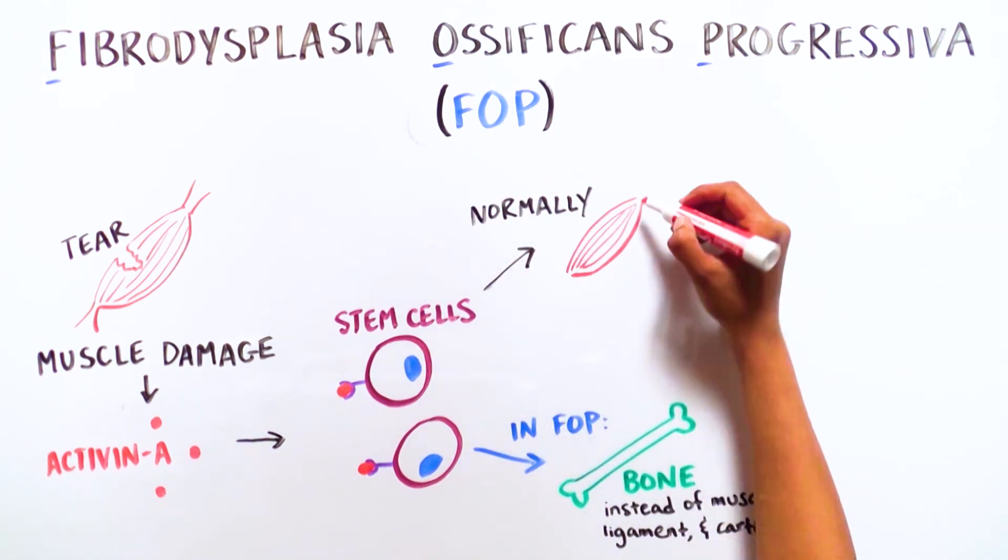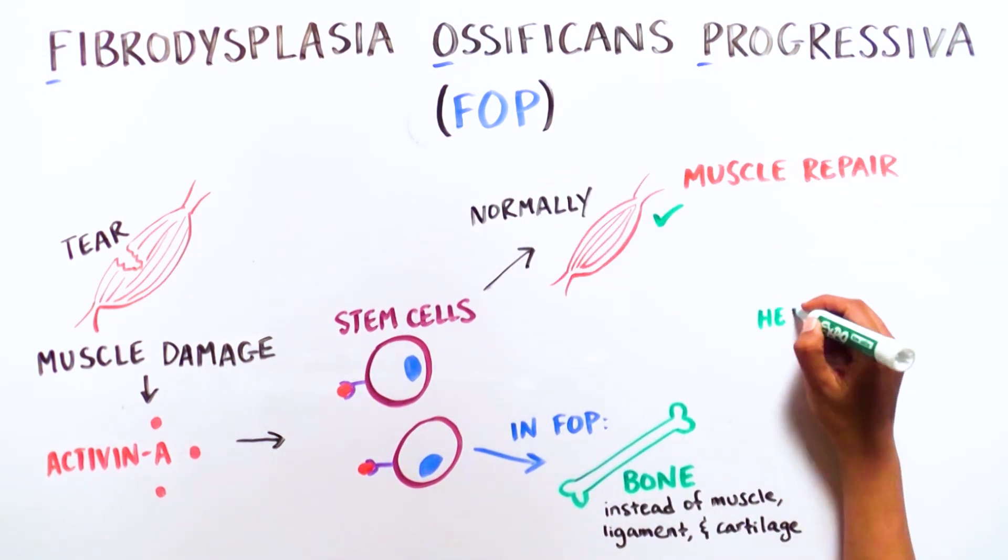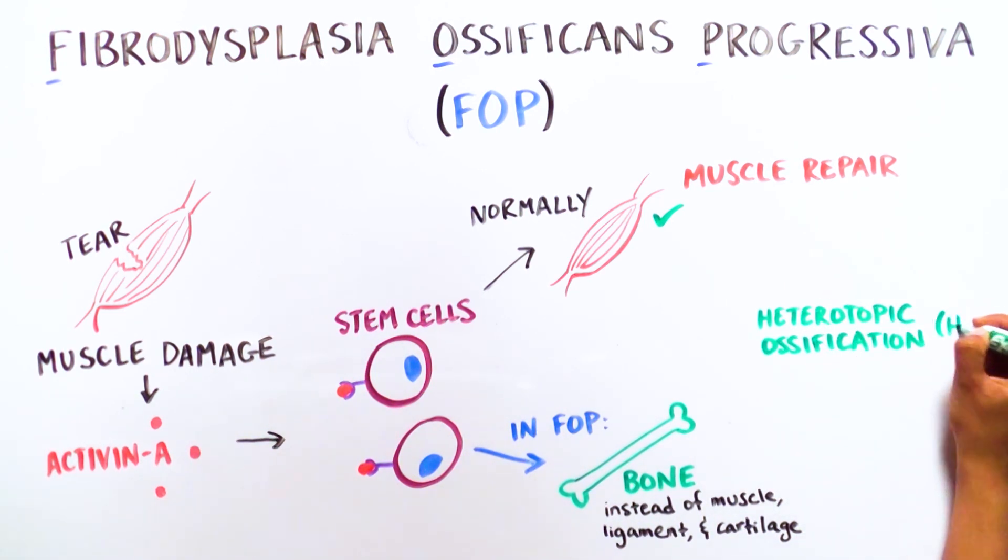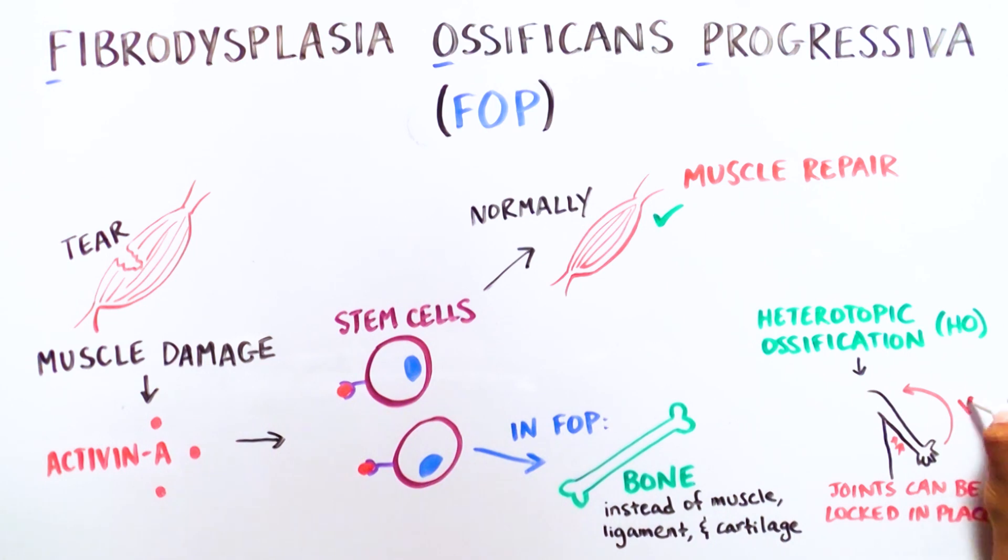Bone growing in the wrong place is called heterotopic ossification, or HO. Over time, joints that are typically surrounded by flexible ligaments and filled with cartilage become restricted by HO and lock in place.